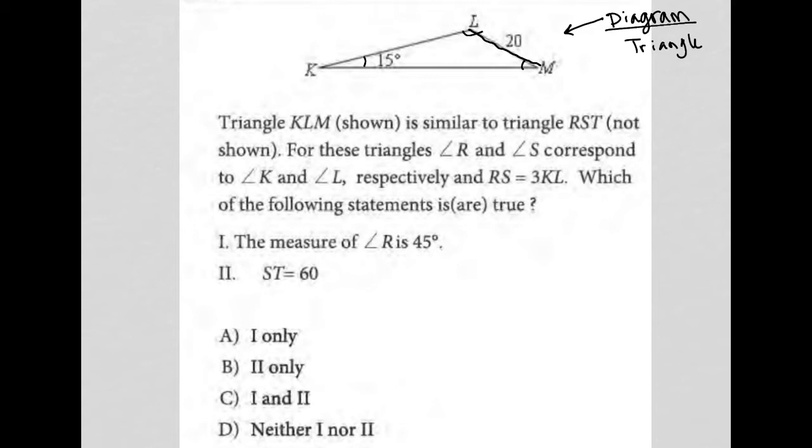Triangle KLM shown is similar to triangle RST. Okay, well, I'm going to draw triangle RST. It says it's similar, which means it has the exact same shape, it just has different lengths. All right, so that would be 15 there. And I'm going to call this KLM, so we'll go this way, RST.